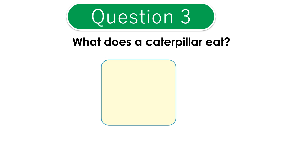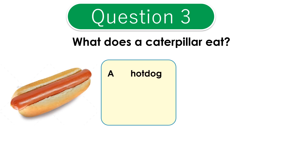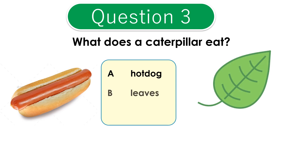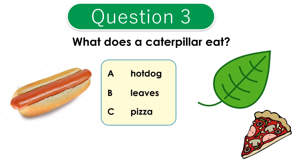Question 3: What does a caterpillar eat? A: hot dog. B: leaves. C: pizza. The answer is B: leaves.